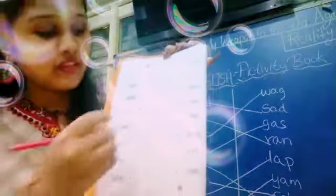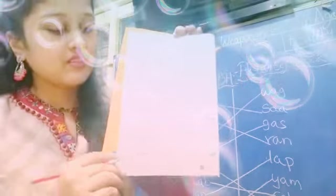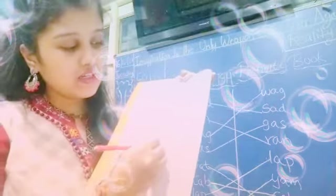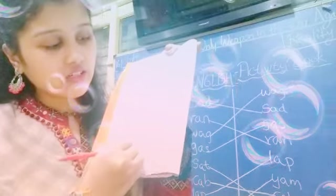Now gas. G A S — gas. You have to match like this. Then sat. S A T — sat. C A B — cab. You have to match words like this. Lap. L A P — lap. Y A M — yam.